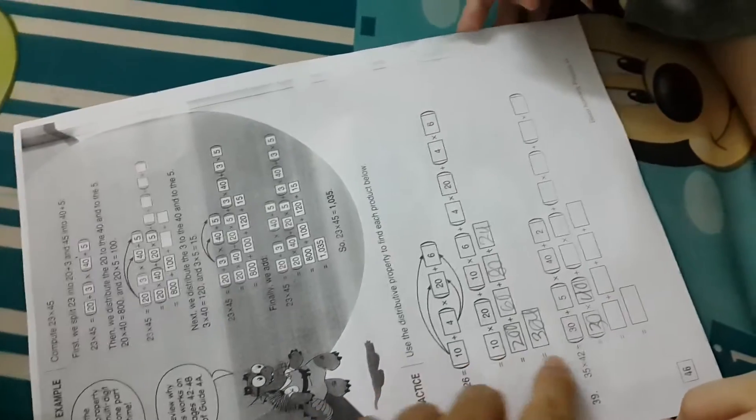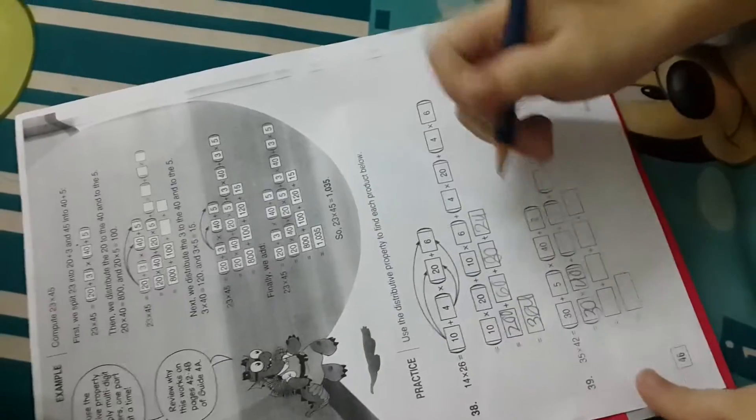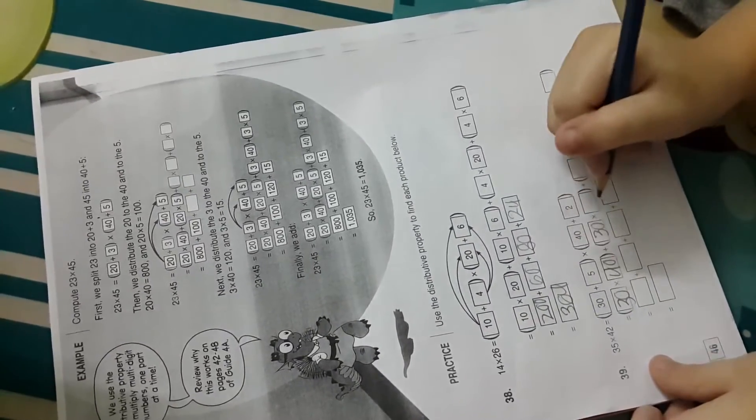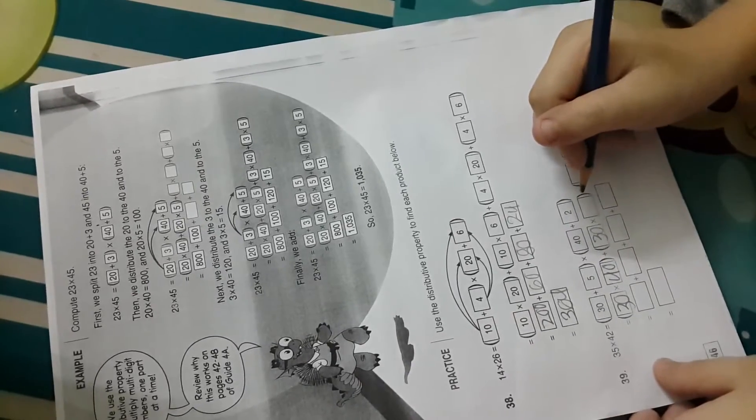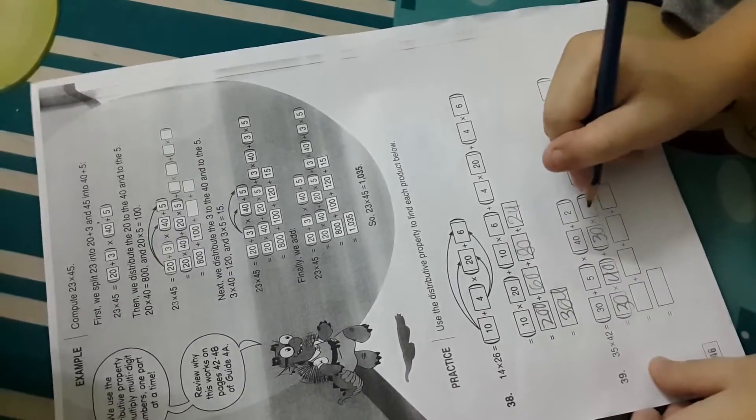So you distributed the 30, I guess, times the 40, and then what are you going to do? You're going to do the 30 times the... times the 2.